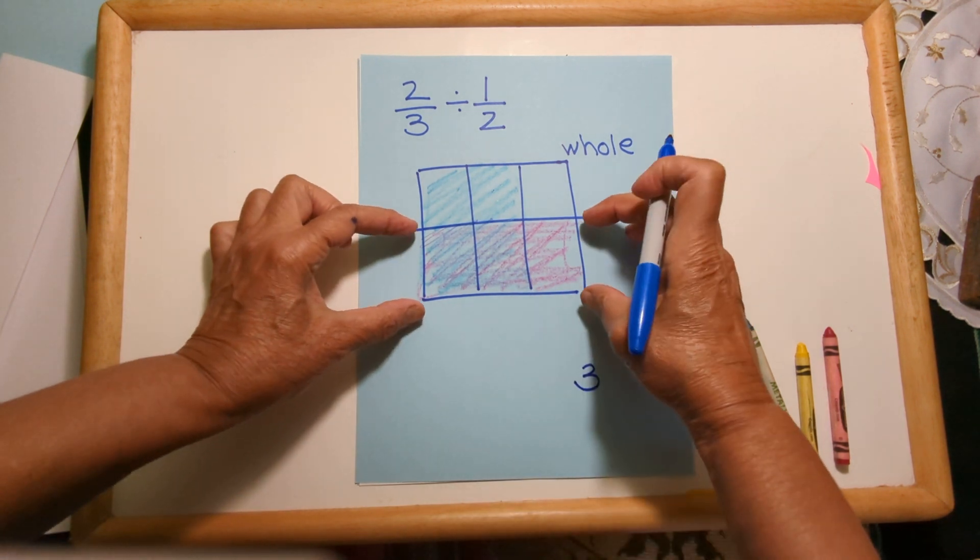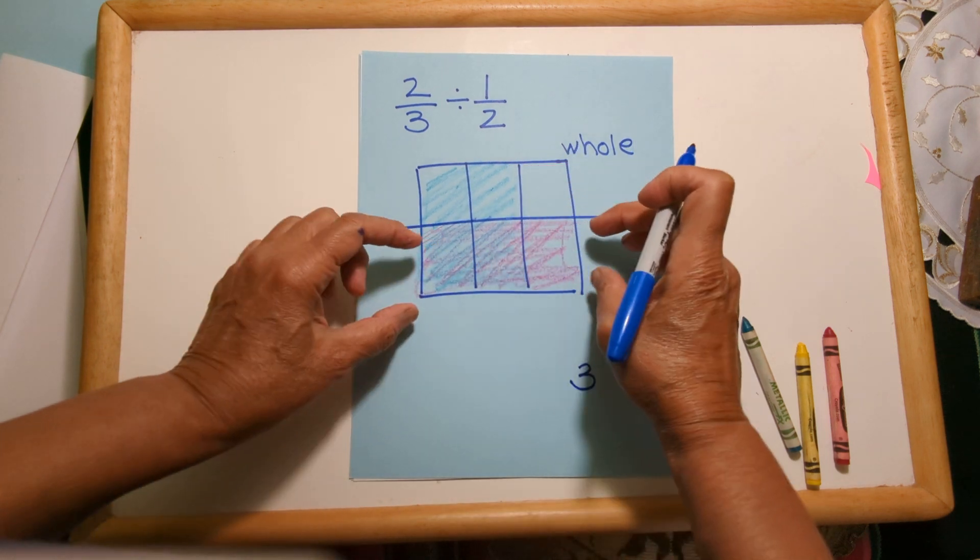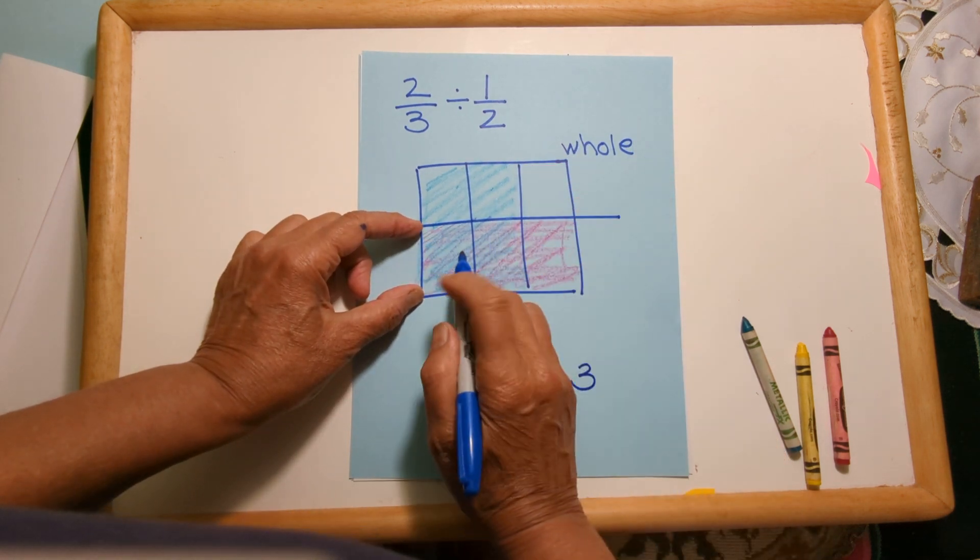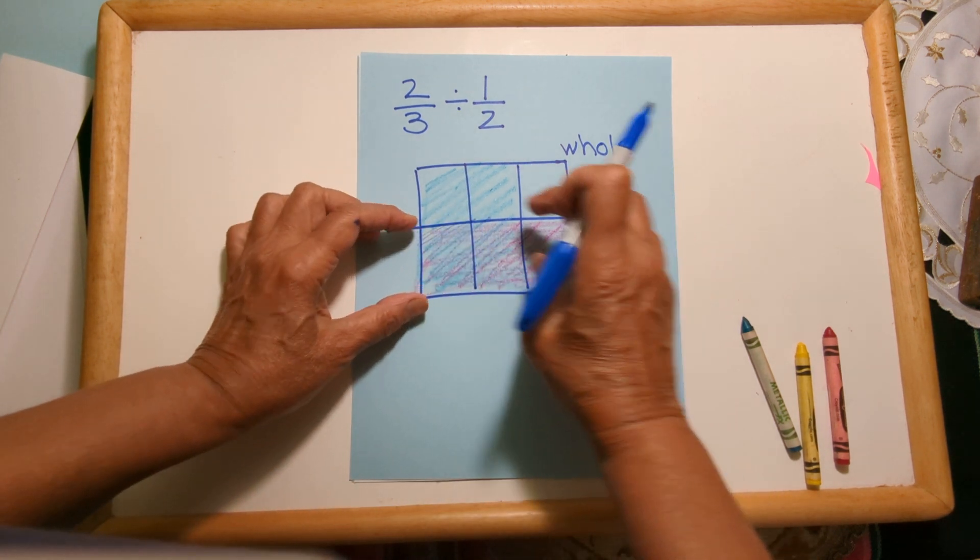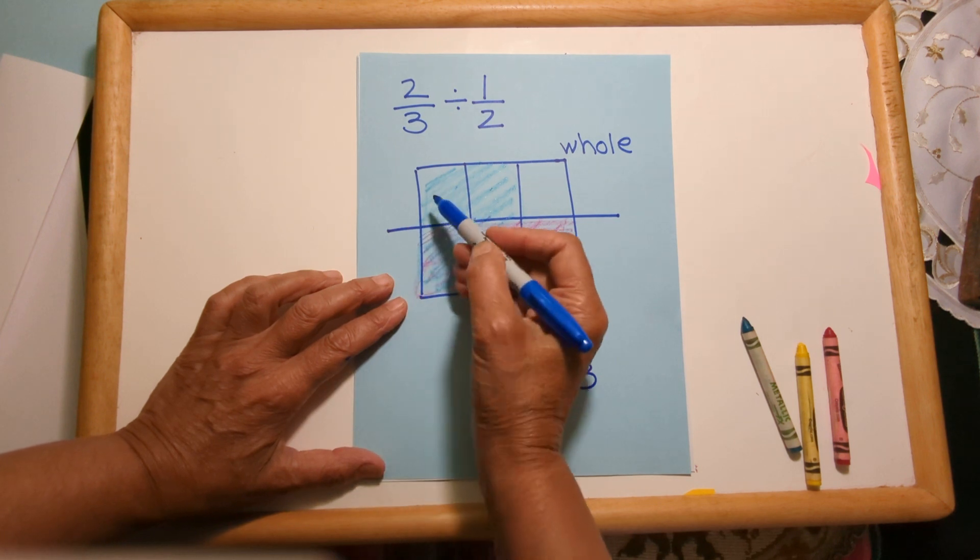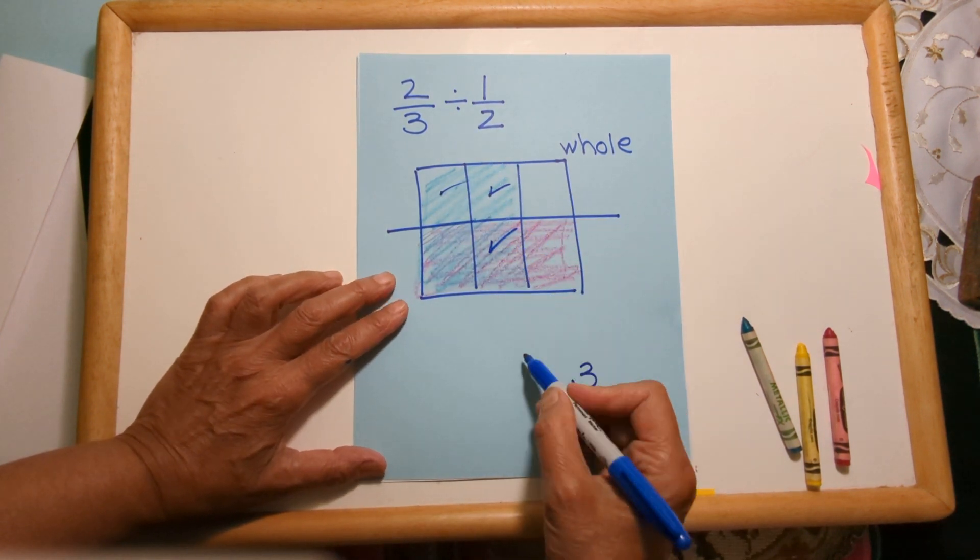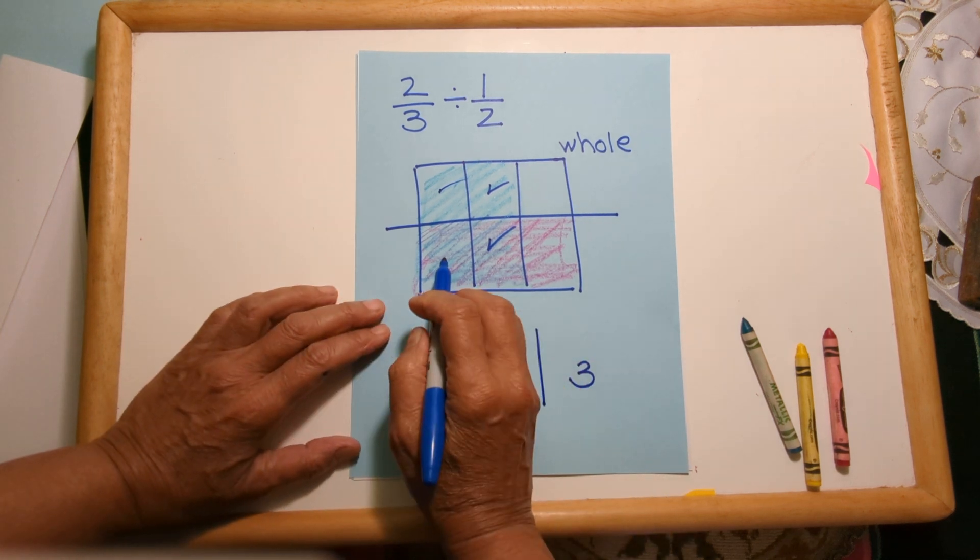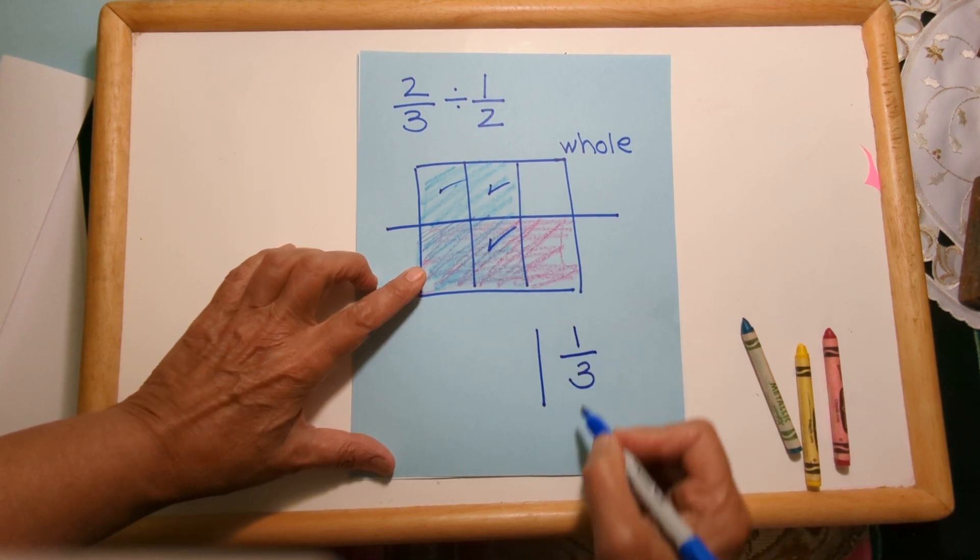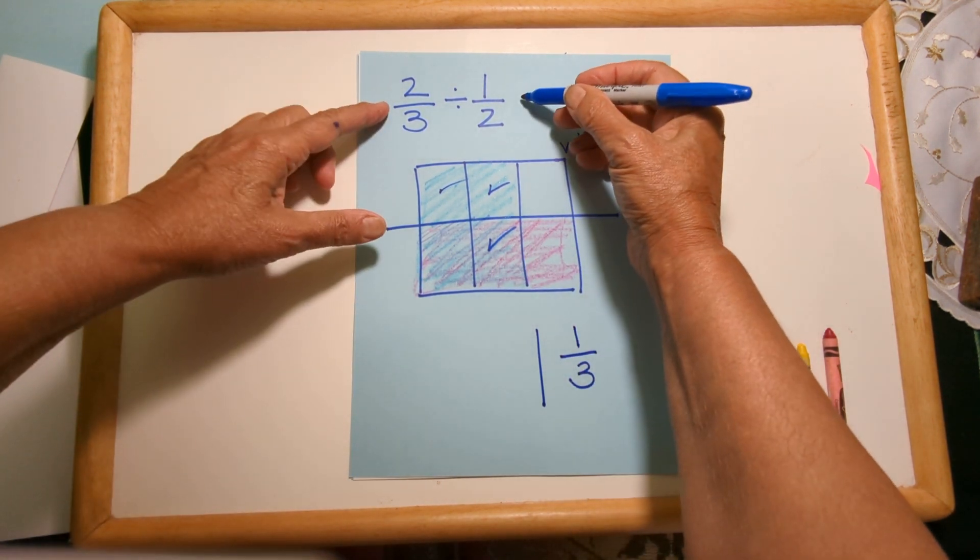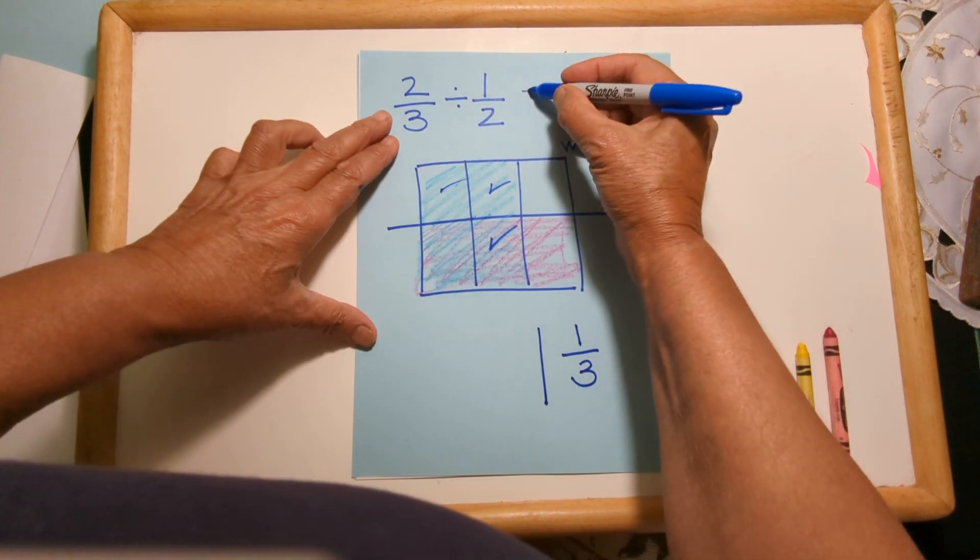Now I want to see how many of these one-halves fit into the two-thirds. So there's one, two, three pieces, and how many of these three pieces fit into the two-thirds? Well, one, two, three. So that fits in one time, but now there's one left over—there's one of three left over. So two-thirds divided by one-half equals one and one-third.